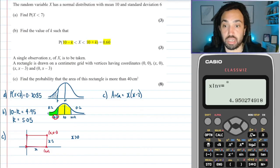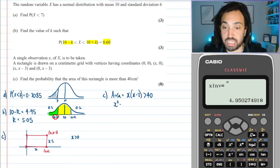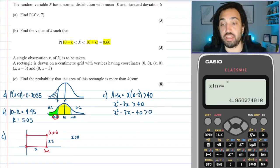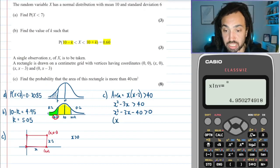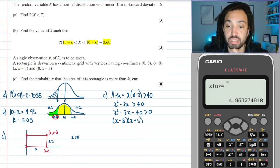And I want that to be greater than 40. So expanding out, that gives me x² - 3x needs to be greater than 40, so x² - 3x - 40 needs to be greater than 0. So that's a quadratic inequality.